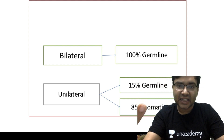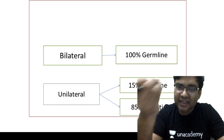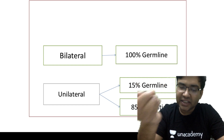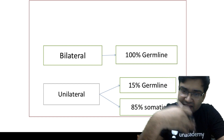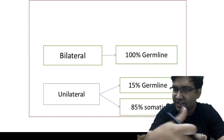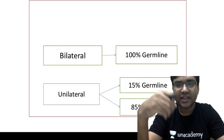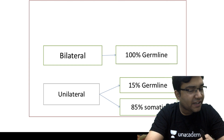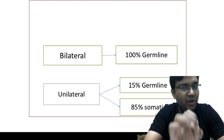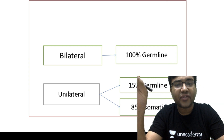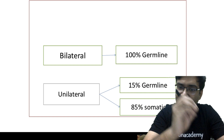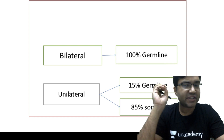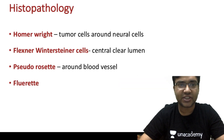The practical aspect is: even if a patient has unilateral retinoblastoma, he can still pass this gene on to his children. In unilateral retinoblastoma, 15% of patients have germline mutations and 85% have somatic mutations.